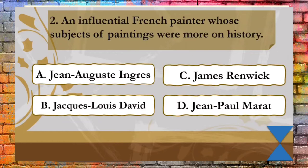Question 2: An influential French painter whose subjects of paintings were more on history. A. Jan August Ingres, B. Jack Louis David, C. James Renric, D. Jan Paul Marat. The correct answer is B, Jacques-Louis David.